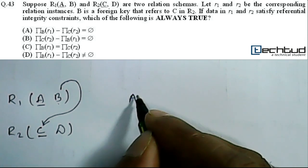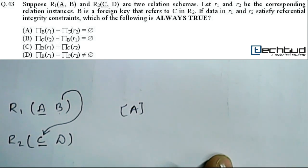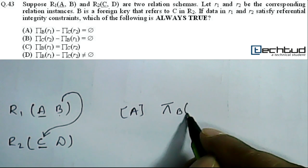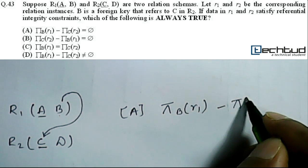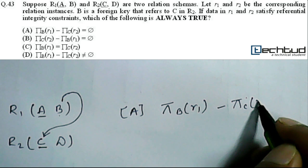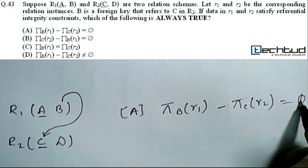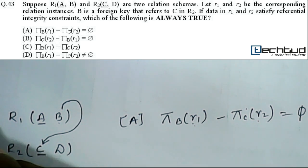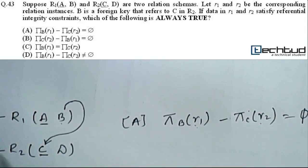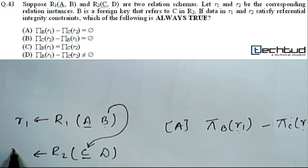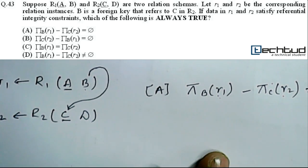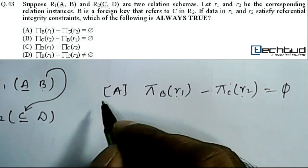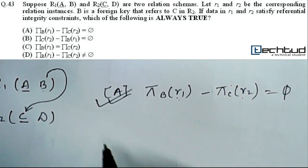Let us start with option A. It is: π(B, R1) minus π(C, R2) equal to φ. What is R1 and R2? They have mentioned a database instance at a particular time — this is R1 and this is R2. We have to check whether this statement is correct or not, and we can easily say that this is correct.